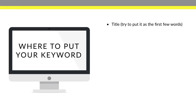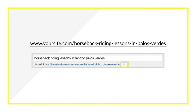Beyond the title, also put your keyword in the URL. For example: yoursite.com/horseback-riding-lessons-in-palos-verdes. That is the URL, and you can easily change it in WordPress. Most agents are running WordPress sites, and even websites built by big companies are usually running on WordPress as well. Every WordPress site is the same on the back end — just click Edit and you can edit your permalinks, which I've circled in yellow.